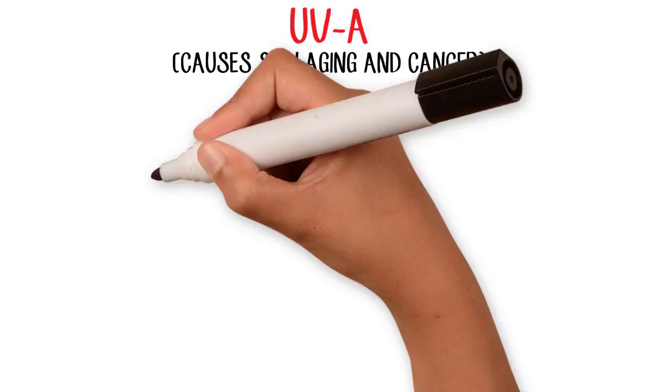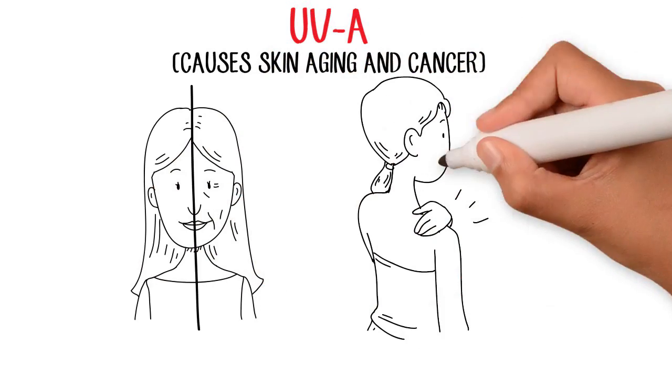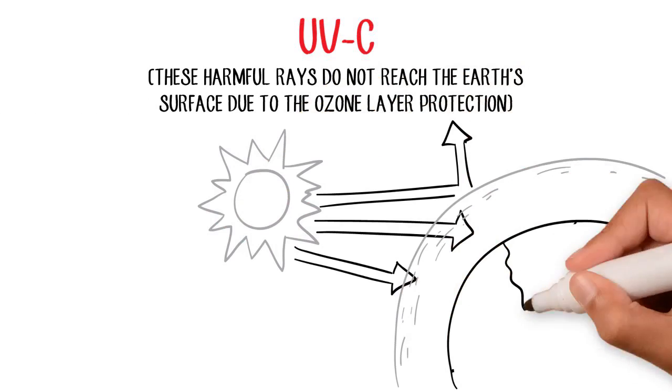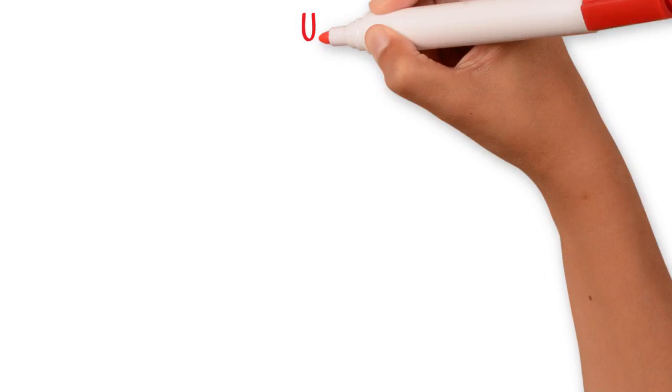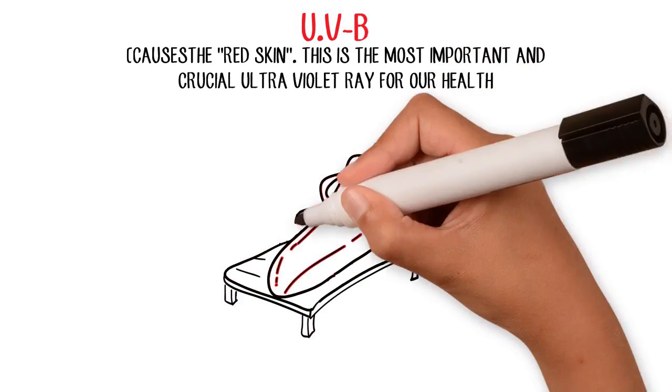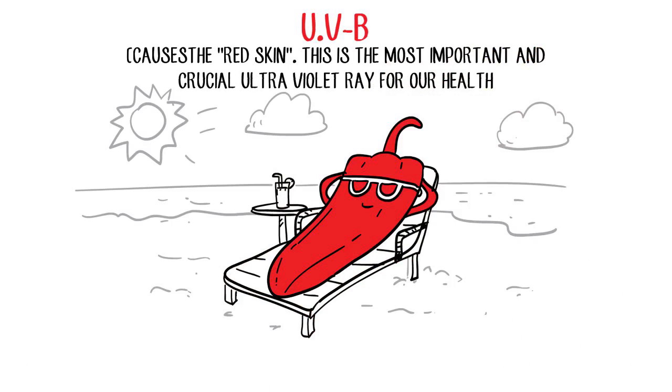UVA causes skin aging and cancer. UVC, these harmful rays do not reach the Earth's surface due to the ozone layer protection. And UVB causes the red skin. This is the most important and crucial ultraviolet ray for our health.